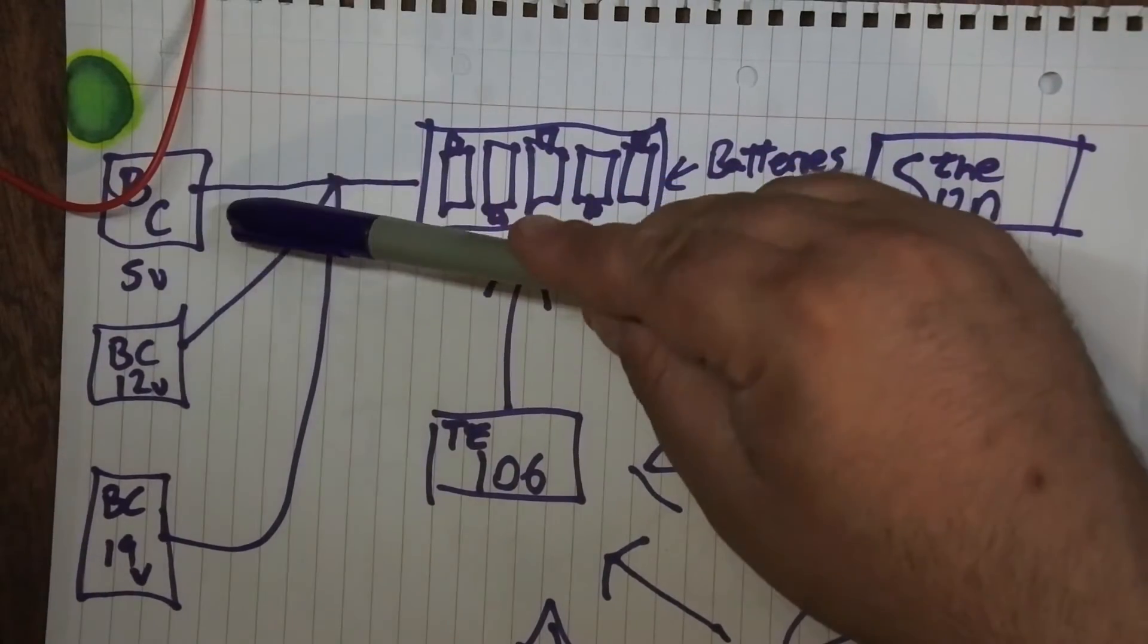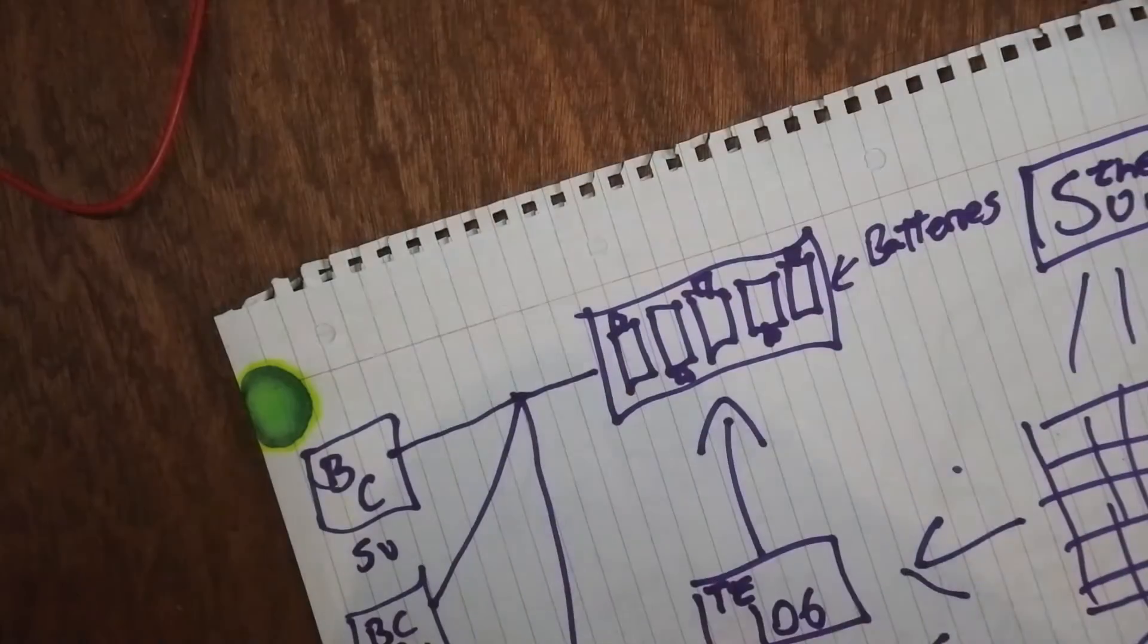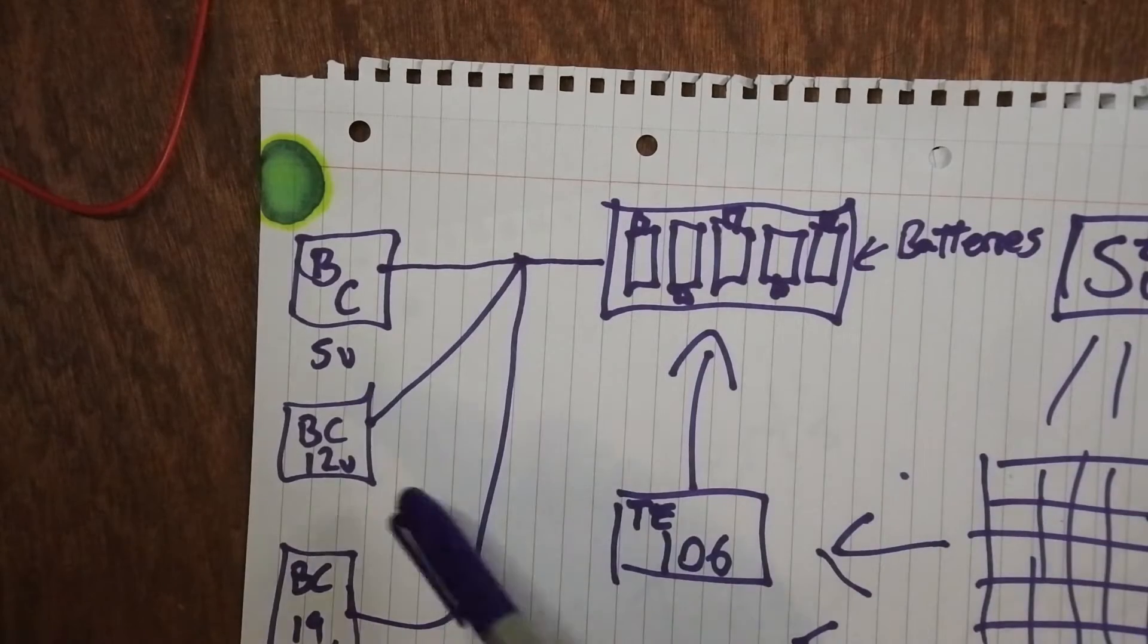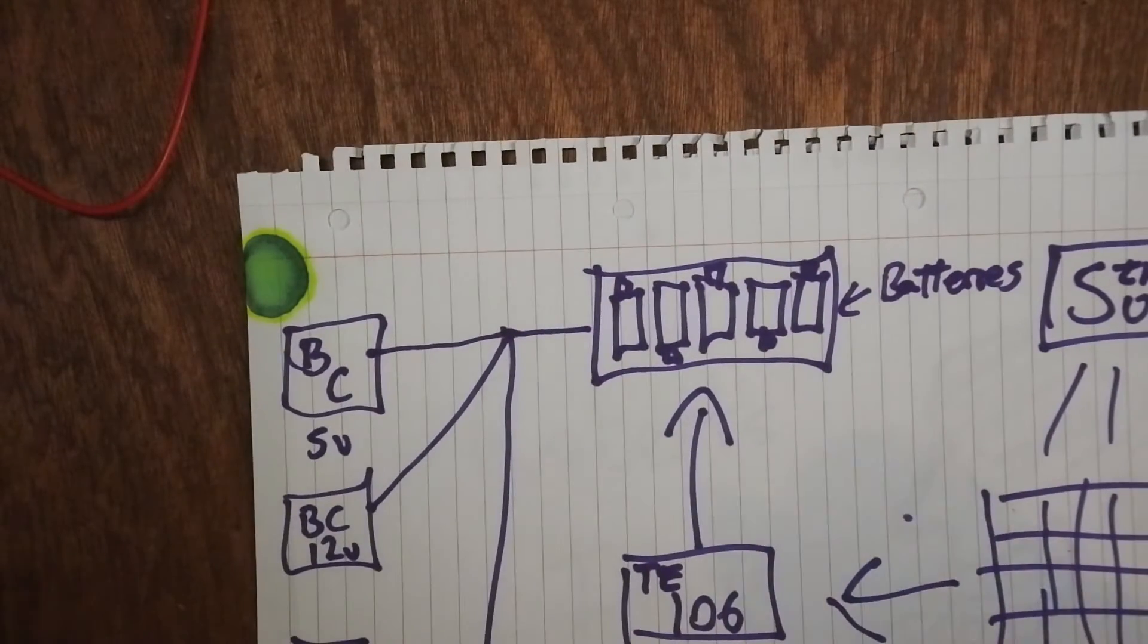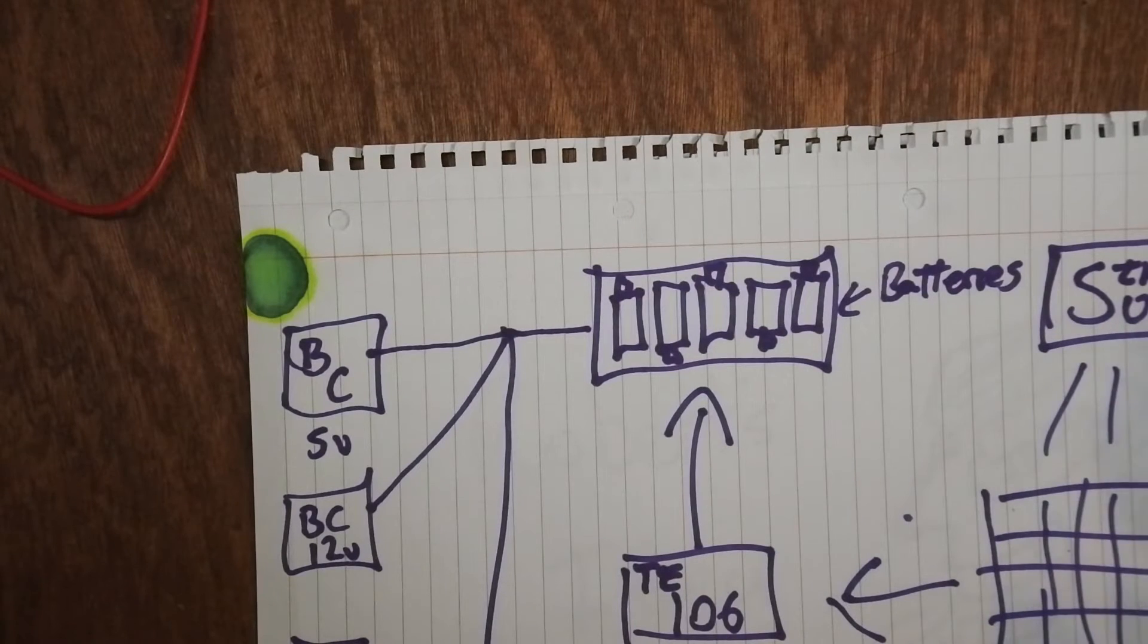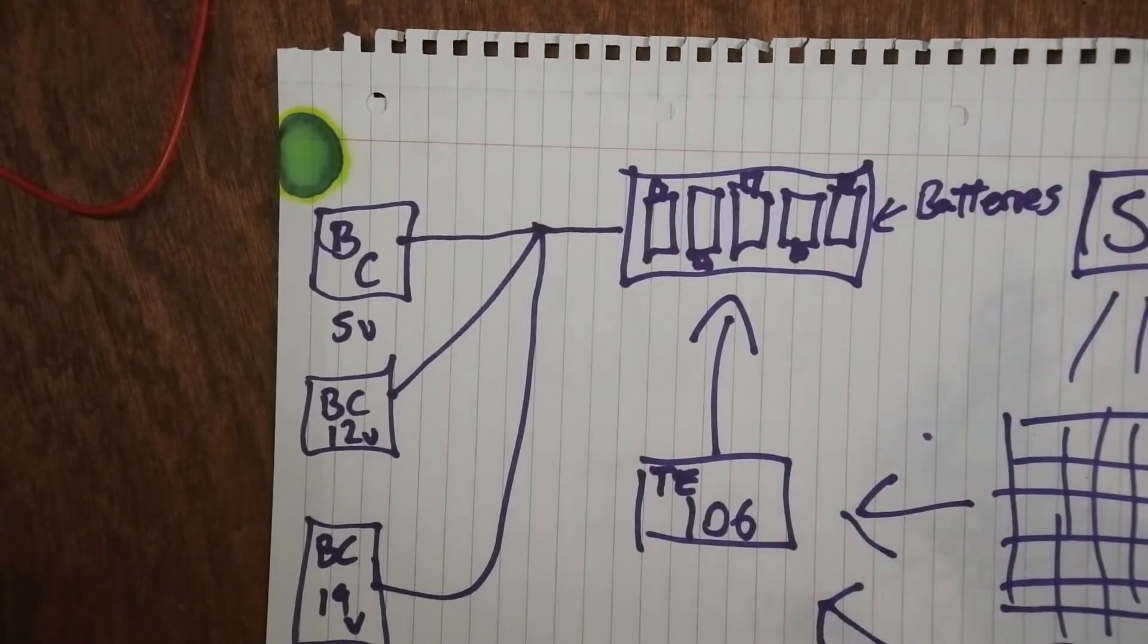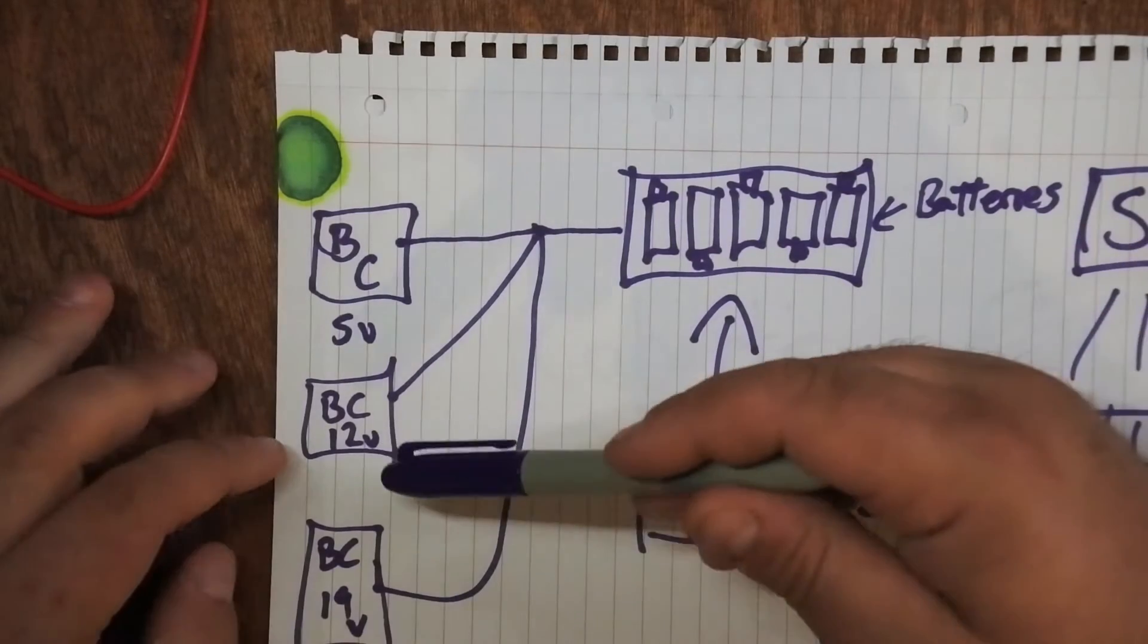But I want 5 volts, 12 volts and 19 volts. And the reason why is 5 volts is the USB voltage for charging phones. 12 volts is fairly common. I've seen a lot of mains adapters, powered devices use 12 volts, various things like battery chargers, lights, you name it. They all seem to be 12 volts.